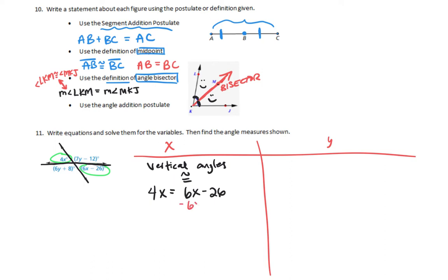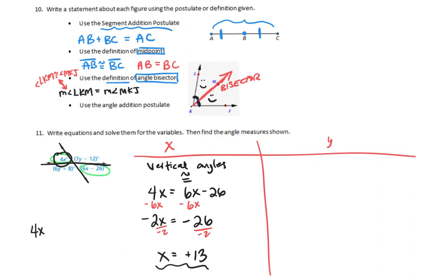Let's solve: 4x = 6x − 26. Subtract 6x from both sides: −2x = −26. Divide by −2: x = 13. Plugging back in: 4 times 13 is 52 degrees. Checking with the other expression: 6(13) − 26 = 78 − 26 = 52. Both vertical angles are 52 degrees.